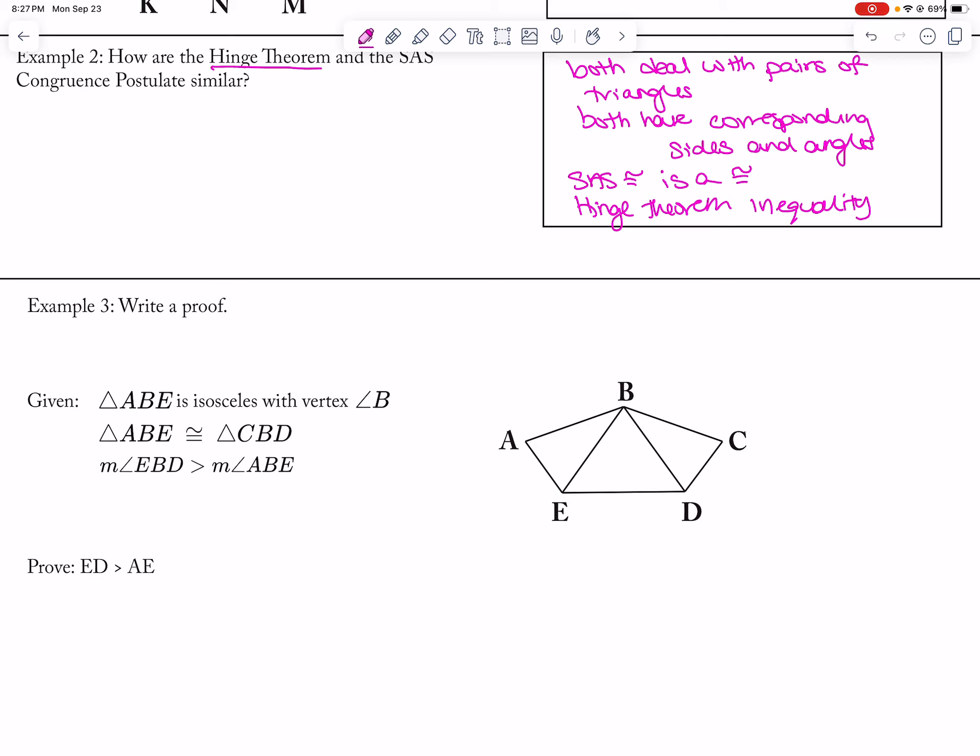Okay, so triangle ABE is isosceles, so that means that those side lengths are equal. Triangle ABE is congruent to CBD, which means these sides are congruent. The other piece of information is that angle EBD is bigger than angle ABE. So this angle here is larger than this angle there.